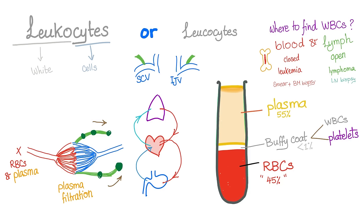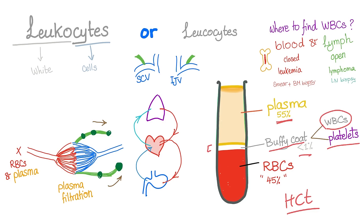If you take a blood sample and do centrifugation: red blood cells are the heaviest and have the highest density, so they go to the bottom — about 45% of the whole blood, which is why your hematocrit is 45%. Plasma is lighter, lower density, and goes to the top at 55%. In between there is a very tiny layer — less than 1% — called the buffy coat, which contains both white blood cells and platelets. White blood cells appear white, which is why they're called white blood cells. Sometimes this layer appears green because the most numerous white blood cells are neutrophils, which contain the myeloperoxidase enzyme — that's why they're green.